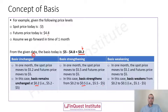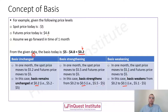Earlier the basis was $0.20, which has risen to $0.50 — so this is a scenario of basis strengthening. Next, let's understand basis weakening. Let's say in one month the spot price has moved to $5.10 and the futures price has moved to $5.00. The difference is $0.10. Comparing $0.10 versus the original $0.20, we see a decrease — we say there is a weakening of basis.